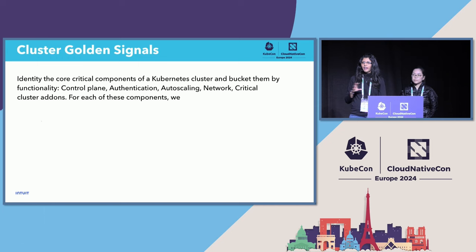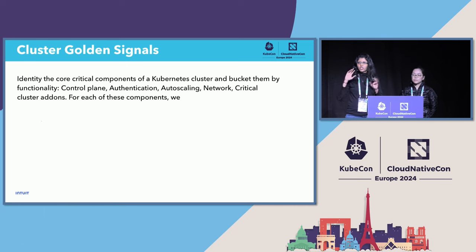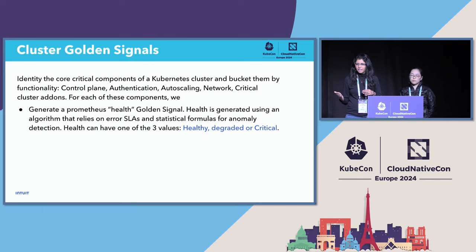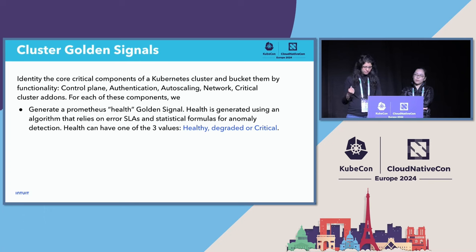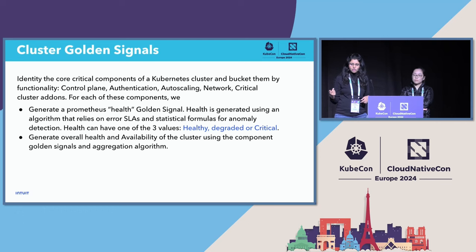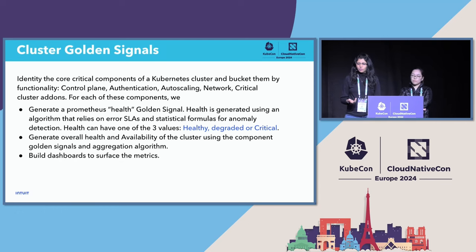We identified the core critical components of a Kubernetes cluster and bucketed them across several functionalities such as control plane metrics, authentication, auto-scaling, network critical add-ons, and so on. For each of these components, we generate a single Prometheus health golden signal. The health is generated based on error SLAs being breached or error counts, and can have one of three values: healthy, degraded, or critical. The overall health of a cluster is an aggregation of all critical cluster components — a cluster can be healthy only if all critical components are healthy. We've built dashboards to surface these metrics and set up alerting, with the idea to automatically create incidents based on cluster golden signals being degraded or critical.